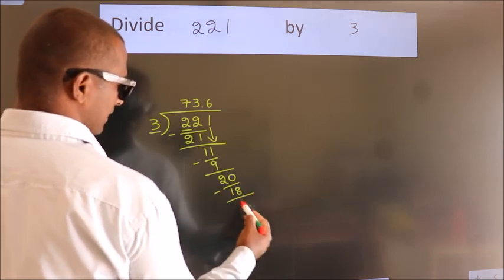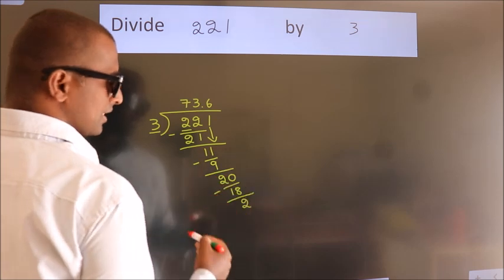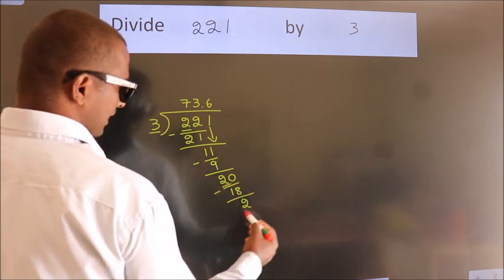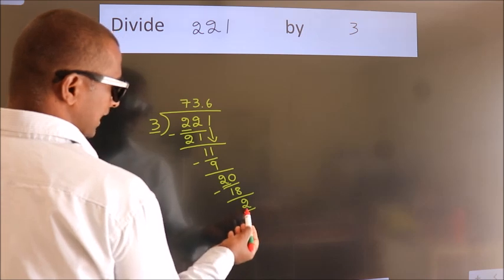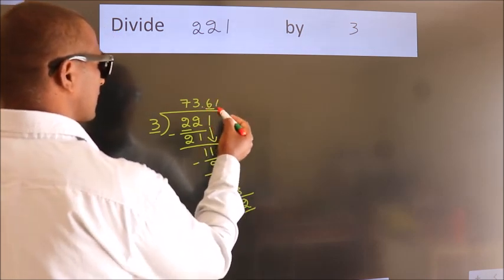Now we subtract. We get 2. Now, observe. We had 2 here, and we got 2 again. That means this number keeps on repeating.